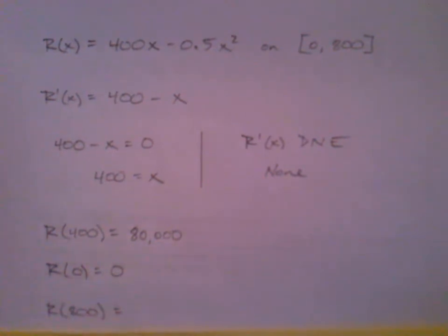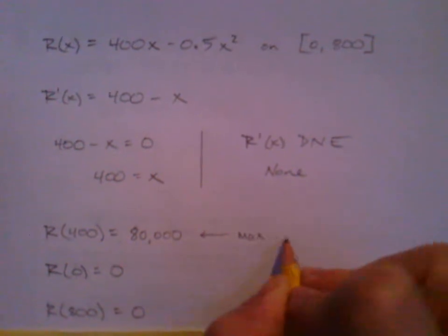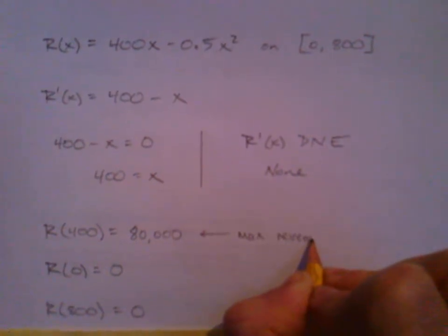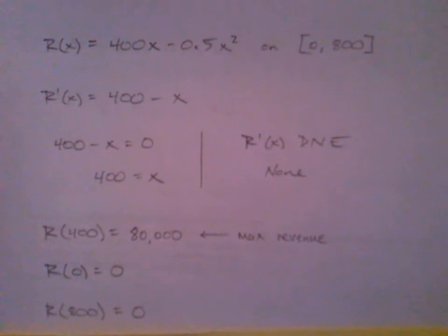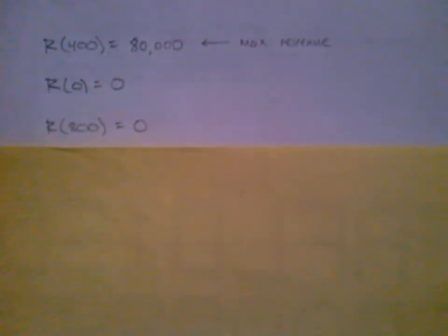If x is 0, then our revenue is 0. Yeah, you don't sell any cameras. Even if we sell 800 cameras, we're not going to make any money either, because in order to get all those out the door, in theory, we have to charge $0. So that revenue is going to be 0 as well. So we can look and say, there's the max revenue right there. $80,000. And we just about got it. We just got to make sure that we answer the original question.